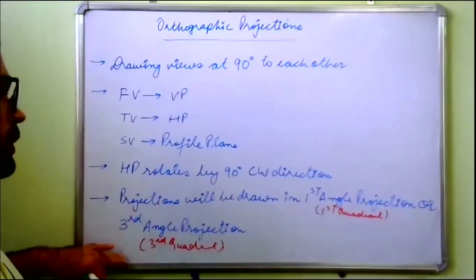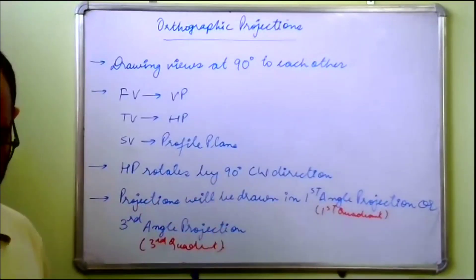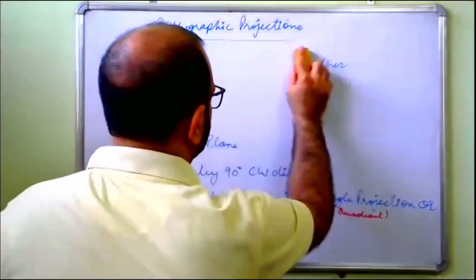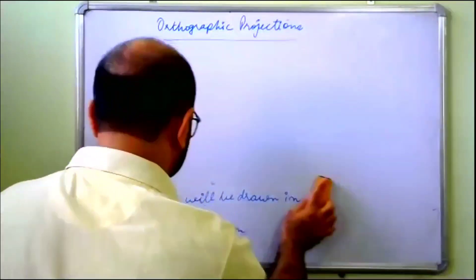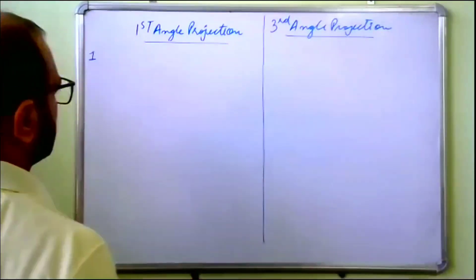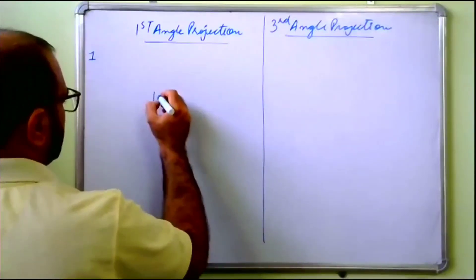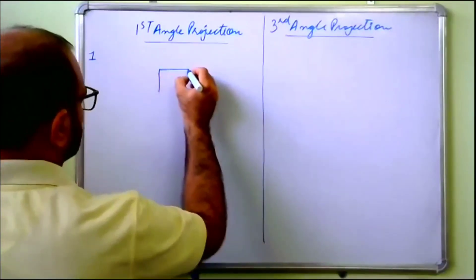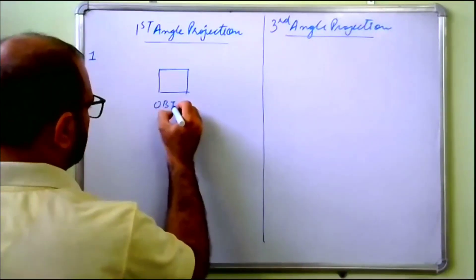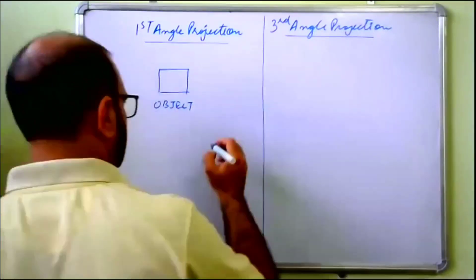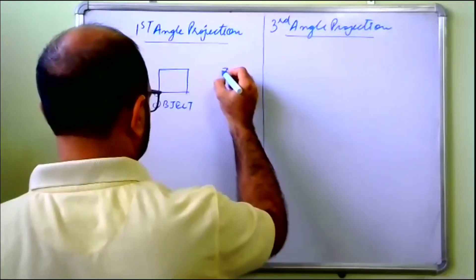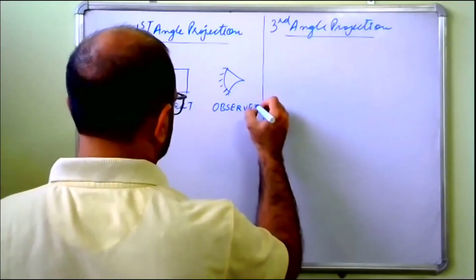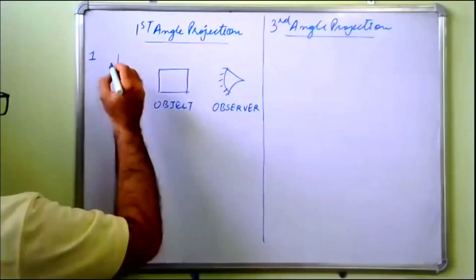We will not be drawing views in the second and fourth quadrant. What is the difference between first and third angle projection? In first angle projection, the object is placed between the observer and the plane of projection.